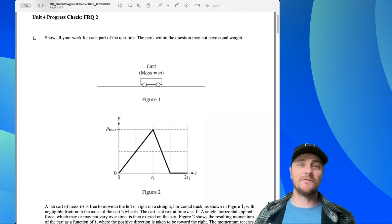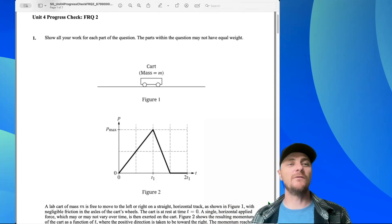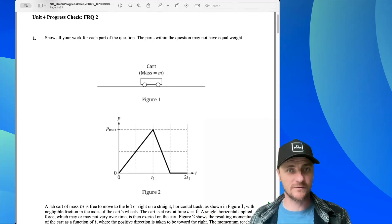All right AP Physics students, you ready to do this? Here we go. This is Mr. Heinrich and it's good to see you. We're looking at Unit 4 FRQ 2 from the AP Classroom Progress Checks.